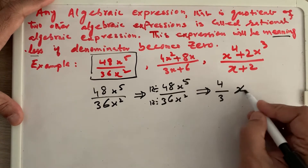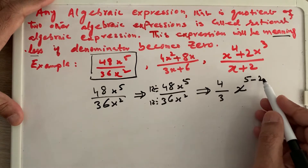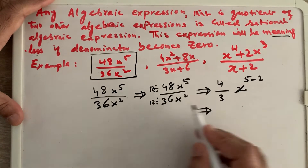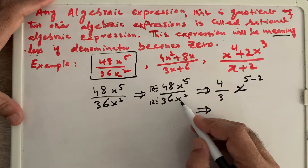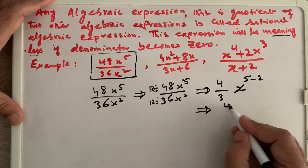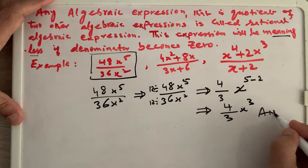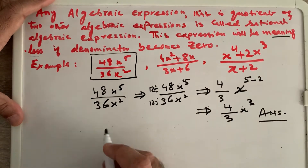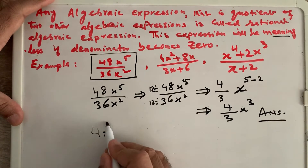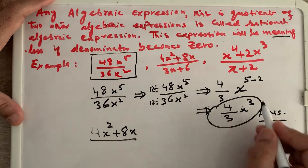So we get 4 over 3, and by the exponent rule, x to the power 5 minus 2, because the lower power in the denominator comes up as a minus. So the answer is 4 over 3 times x cubed. This is the reduced, simplest form — the answer for this rational expression. Every time we have to reduce the expression to where we cannot simplify it any further.